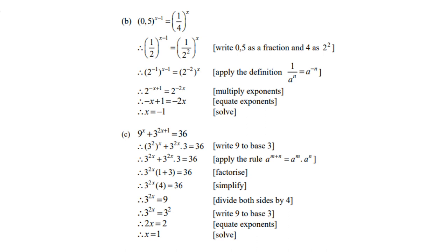Look at C: 9 to the power x plus 3 to the power 2x plus 1 equals 36. Now 9 is 3 squared, which becomes 3 to the power 2x.